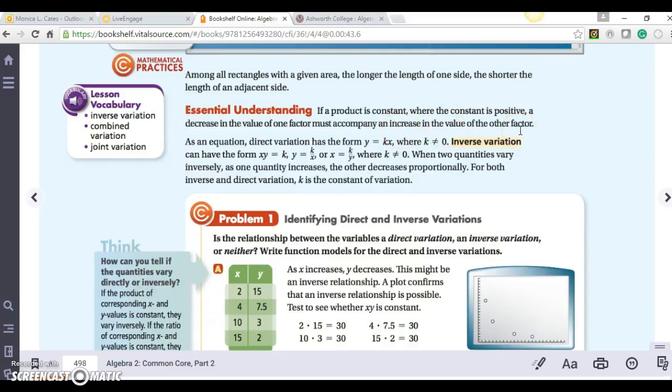That might not make sense just now, but let's keep going. As an equation, direct variation has the form y equals kx, where k is not equal to zero. Inverse variation can have the form xy equals k, or y equals k over x, or x equals k over y. This is all the same, where k is not equal to zero.